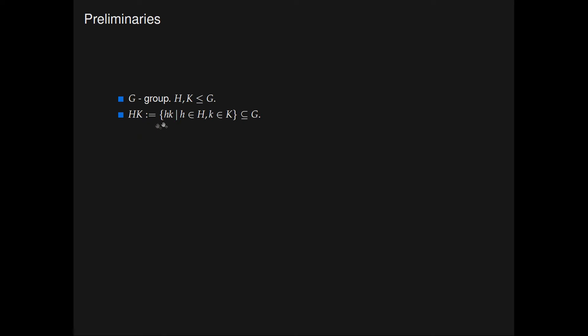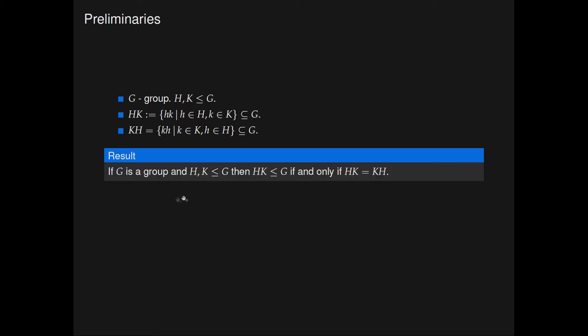Before we answer the question, a bit of background. We assume that G is a group and H and K are subgroups of G. We define HK to be the following subset of G: all elements hk, where h is an element of H and k is an element of K. This is multiplication in G. We define KH in a similar manner.